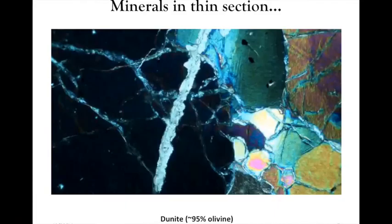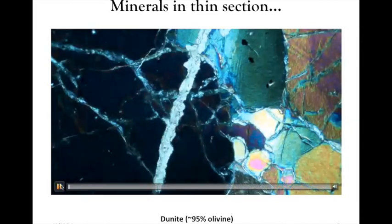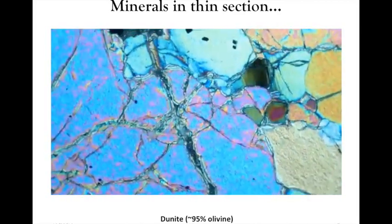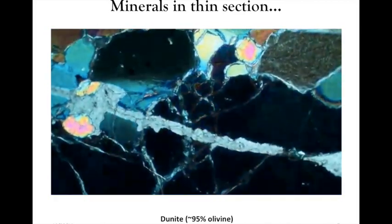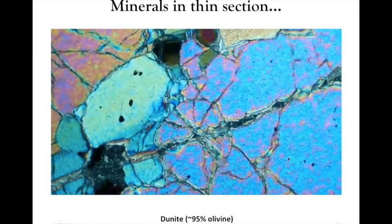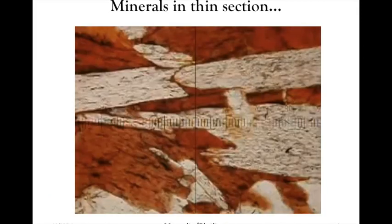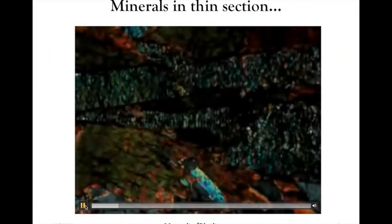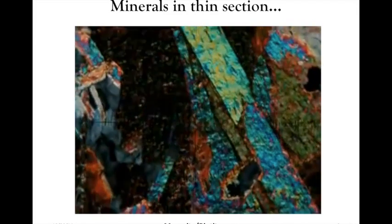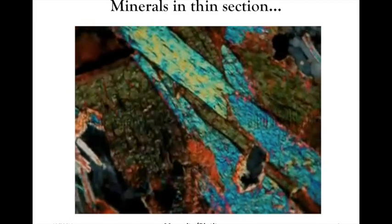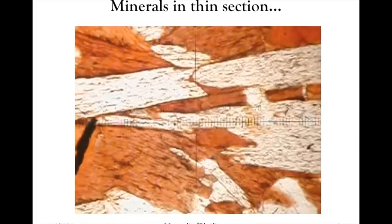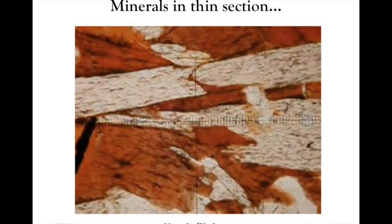Minerals look different under plain polarized versus cross polarized light. Under cross-polars, certain minerals also look very different when you rotate the sample. You're seeing dunite, which is around 95% olivine — the bright colors of those crystals fade and even go black at certain points as the crystal is rotated. In the example of muscovite and biotite grains, the angle of those crystals going black to black again is about 90 degrees, giving us useful information.